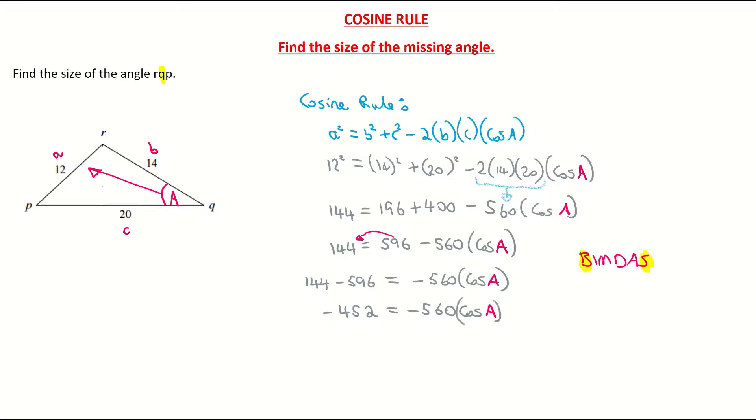I now need to get cos angle on its own, so I'm going to divide across by -560. Again, think of it as something maybe simple like this: 10 = 2x, x = 10 divided by 2. So I'm dividing across by 2. So keep it simple. So here, if I divide across by -560, that is giving me -452 all over -560 is equal to cos of my angle.